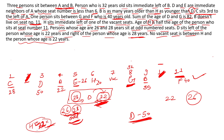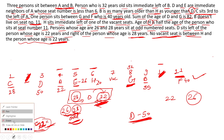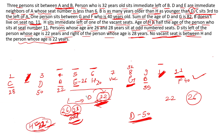Final verification: 'No vacant seat between H and the person aged 22.' H is on seat 6, A (age 22) is on seat 4. Between them is seat 5 (E) — no vacant seat. Condition satisfied. The question is now fully solved.